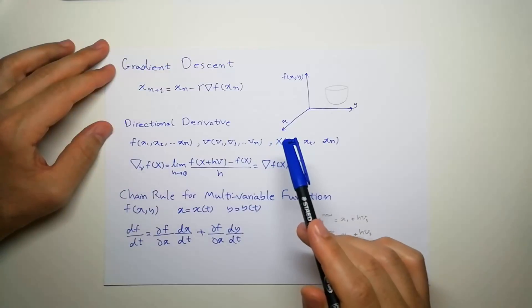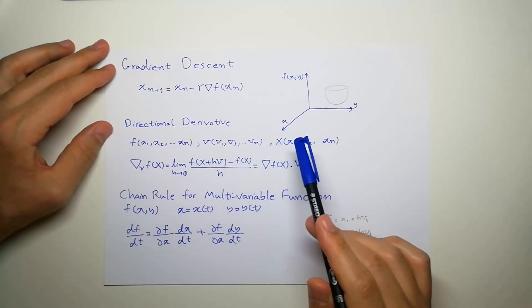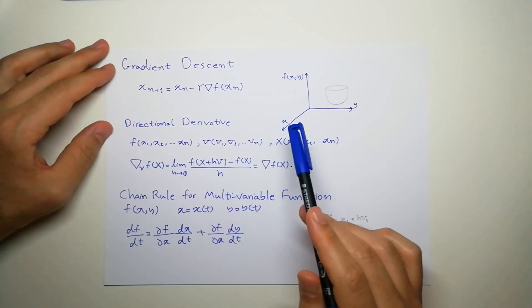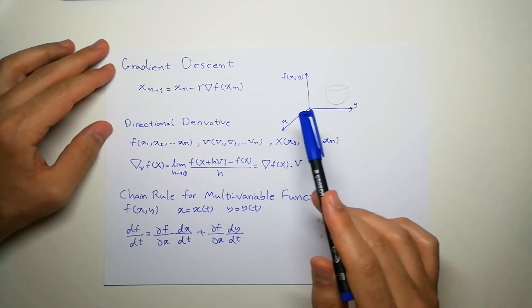Hi. In this tutorial, I'm going to talk about gradient descent and its proof. Where do we get all this equation?